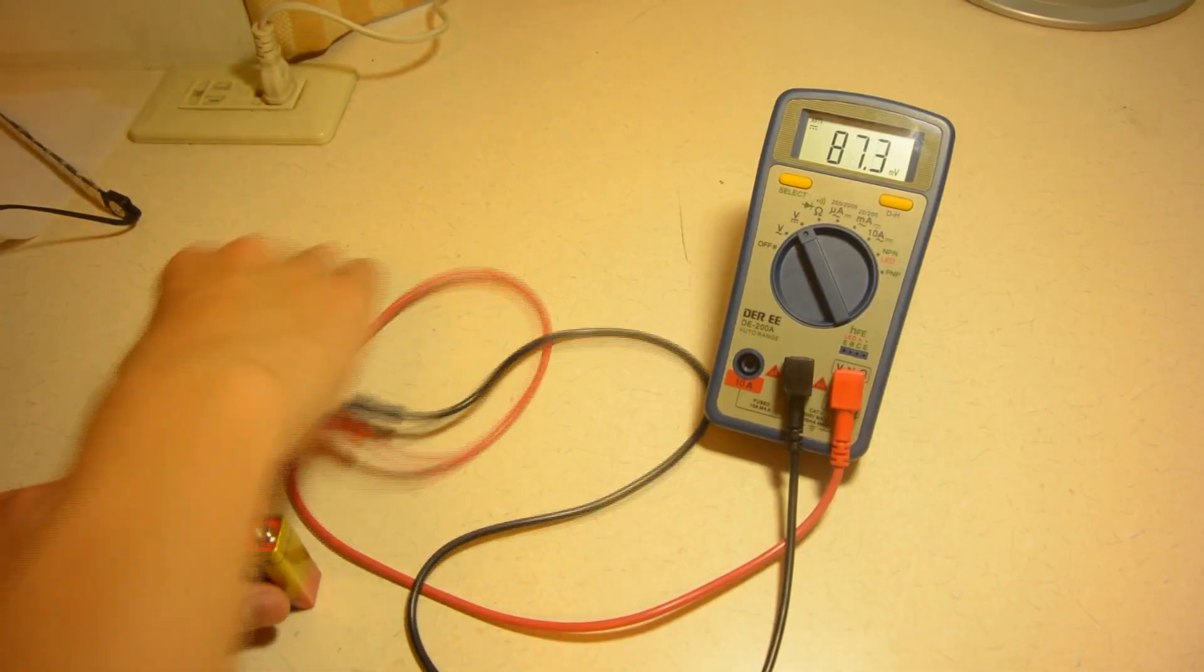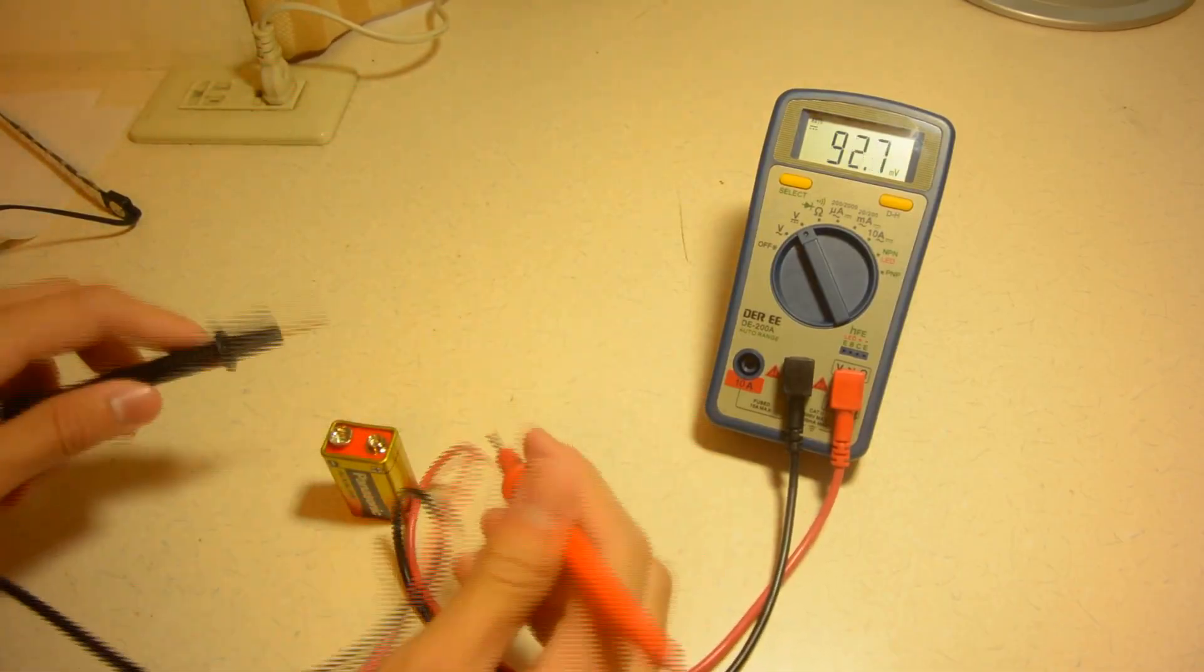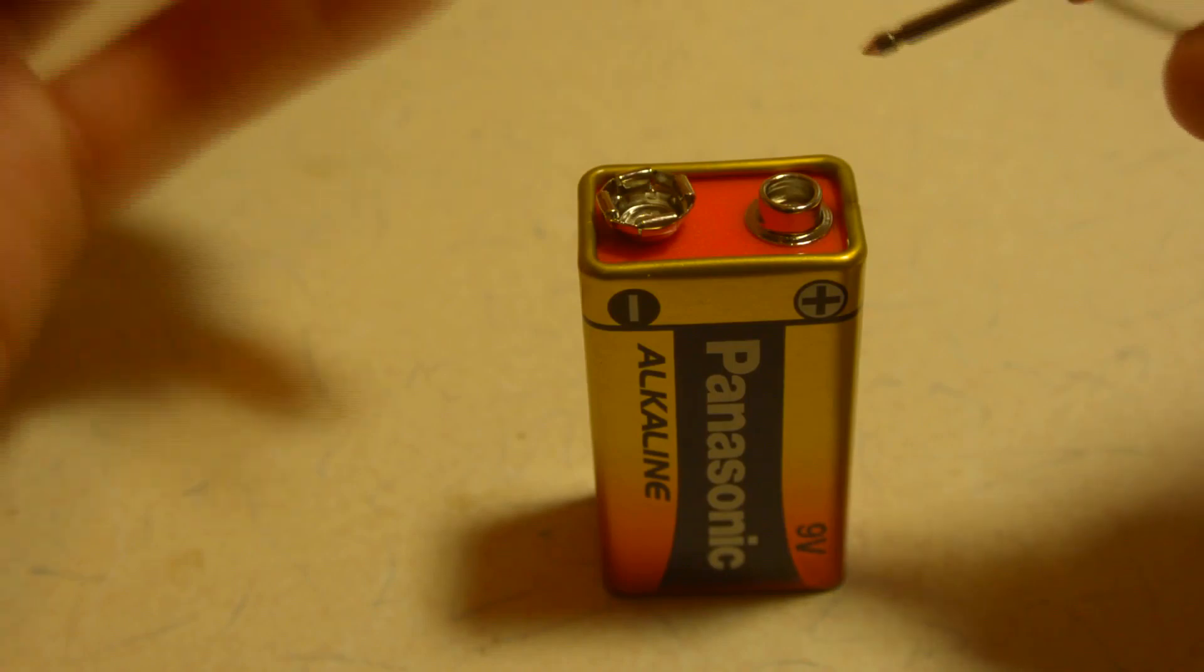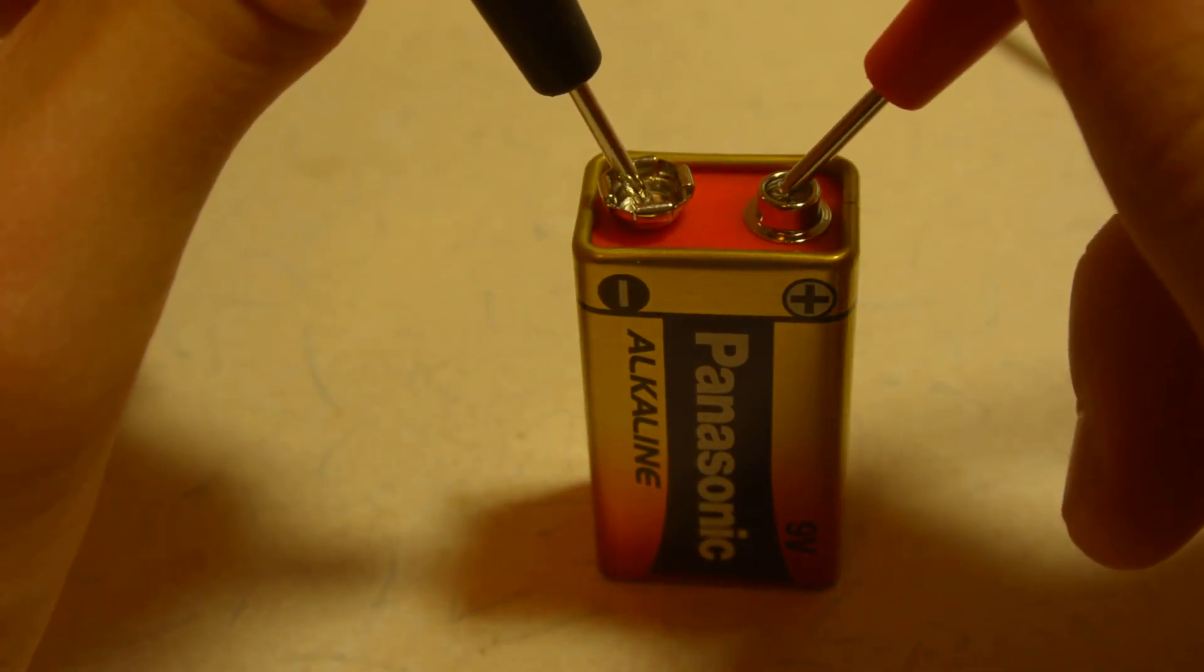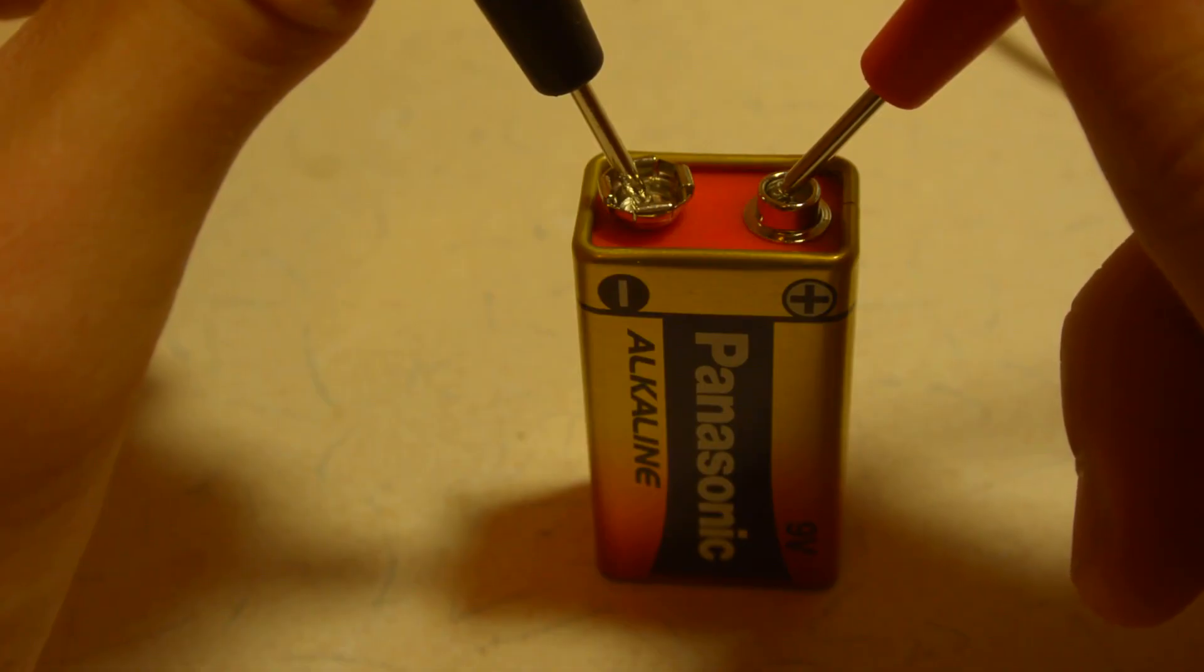Now, remember that measuring voltage and current is a bit different. Unlike measuring voltage, when you measure current, you cannot connect the leads directly to the power source. This will cause a short circuit and will most likely blow your fuse if you have a current more than 10A.